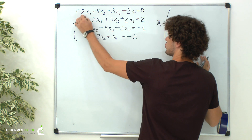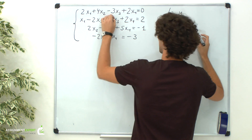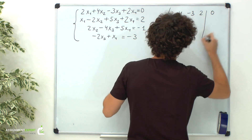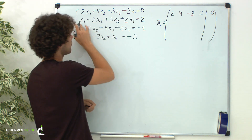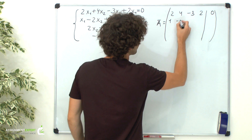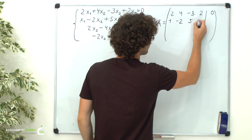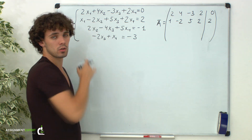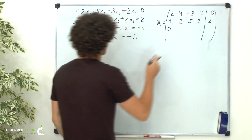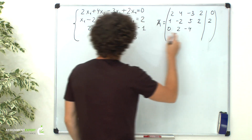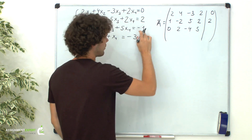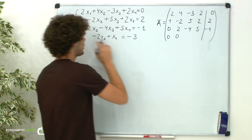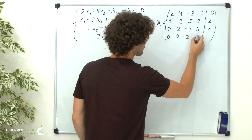In the first row we have 2, 4, negative 3, 2, and 0. In the second row we have 1, negative 2, 5, 2, and 2. In the third equation there is no x1, so the first coefficient is 0. Then we have 2, negative 4, 5, and negative 1. In the last row we have 0, 0, negative 2, 1, and negative 3.